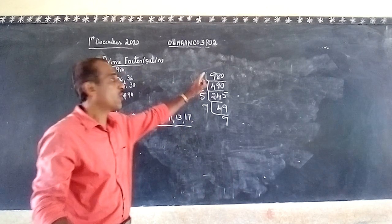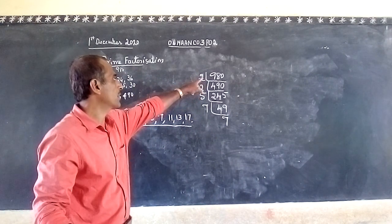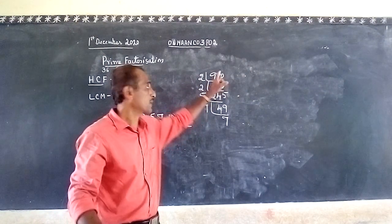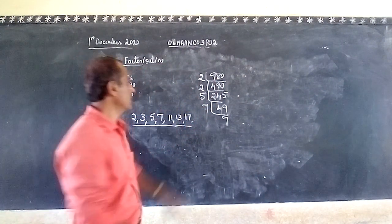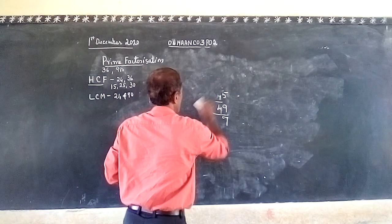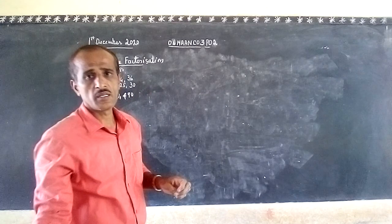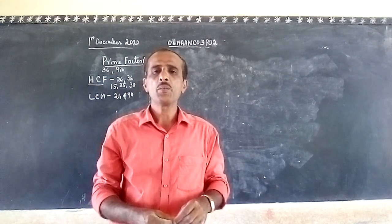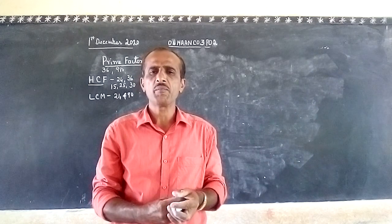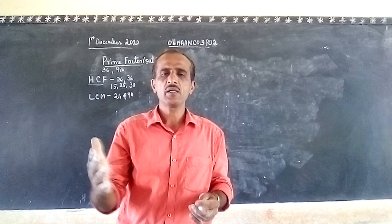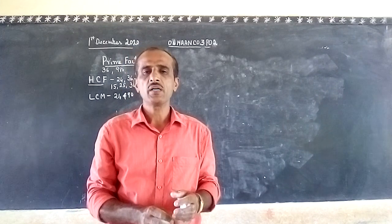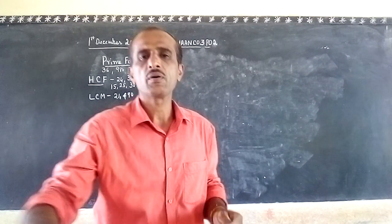To find the prime factors of a number, you have to keep dividing by the least prime numbers. This is the way to find the prime factors of a particular number. This is about co-prime numbers and prime factorization — how to find the prime factors of a given number. We will see LCM and HCF in our next video. See you in our next video. Thank you.